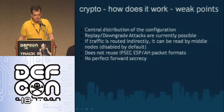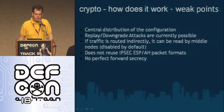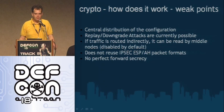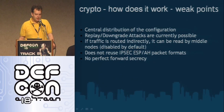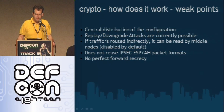There are currently some weak points where the crypto can still be improved. The configuration is distributed over a central server, which is not ideal — you'd prefer multiple servers. However, if the primary server fails, the network still stays up and can run for hours, days, or even weeks without the central server. The only thing that doesn't work is updating your network configuration when the central server is down. Currently, replay or downgrade attacks are possible — an attacker couldn't really alter your network configuration, but could give you an old configuration even if a new one is already out there.